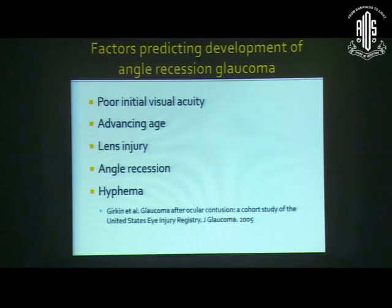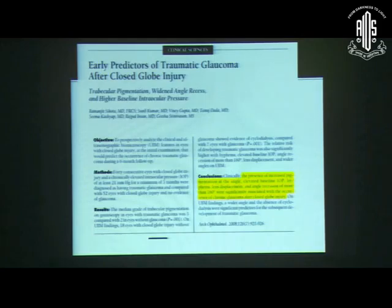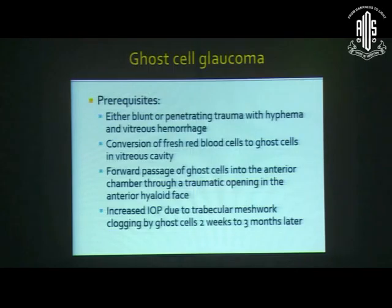Certain factors help predict which patient with angle recession on gonioscopy is at high risk for developing angle recession glaucoma. The United States Eye Injury Registry identified: poor initial visual acuity, advancing age, injury to the lens, angle recession, and high hyphema. Our center's guideline further indicated: increased pigmentation in the angle, elevated baseline IOP, high hyphema, lens displacement, and angle recession of more than 180 degrees as having a very high propensity to develop angle recession glaucoma.